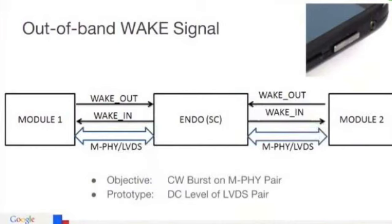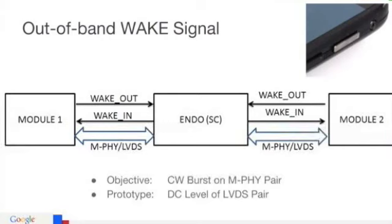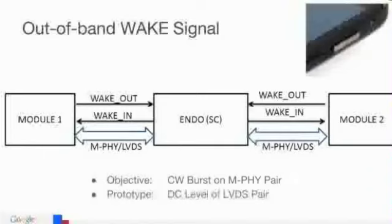When you press the power button on a module, that wakes the endo, and then the endo can go ahead with waking up the rest of the phone and starting up the system. In the objective system, our plan is to use a CW burst on the capacitive data interface, which can be received by a diode detector — zero power on the other side — generating a CMOS level that wakes the system from a microamp state. In the prototype, we're using the DC level of the LVDS pairs. There are wake lines in the MDK schematics that allow a module to wake the endo or the endo to wake a module.